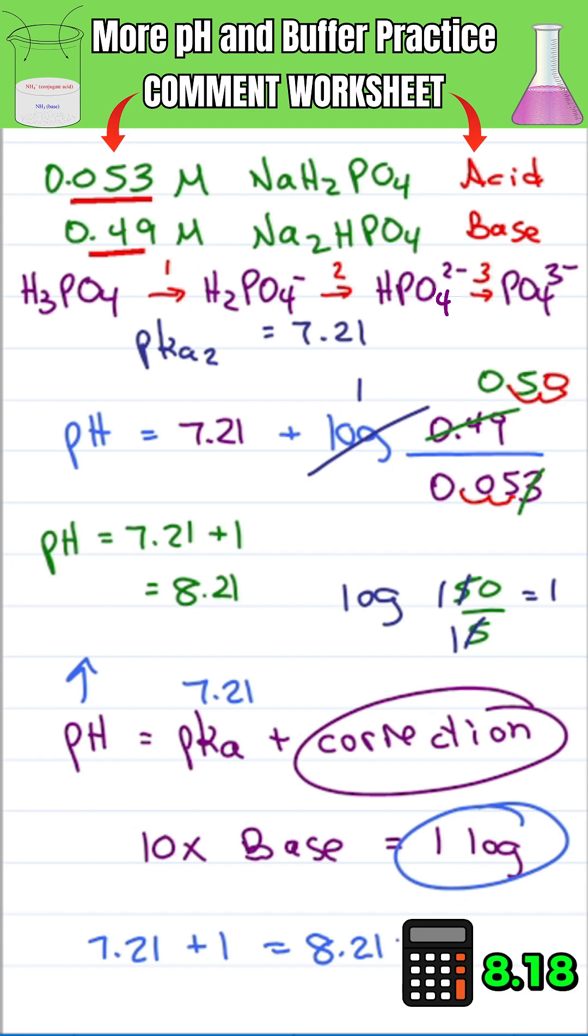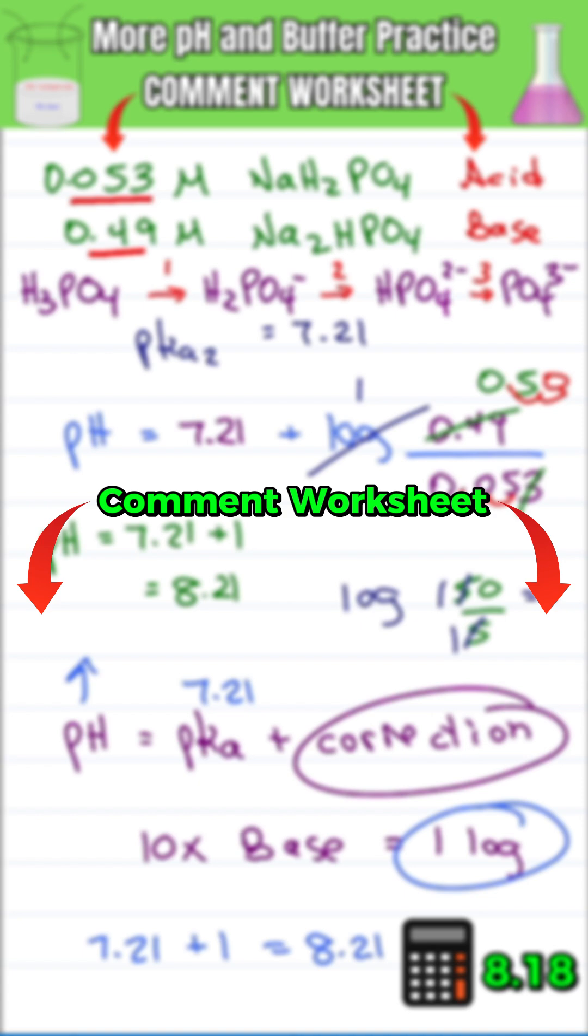Calculator says 8.18, which is close enough. For even more practice on pH and buffers without a calculator, just comment worksheet below.